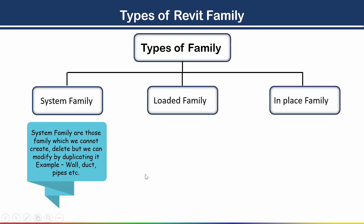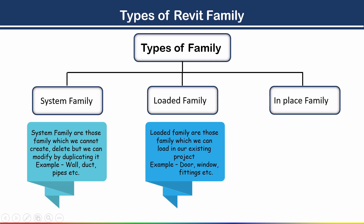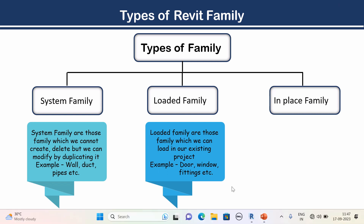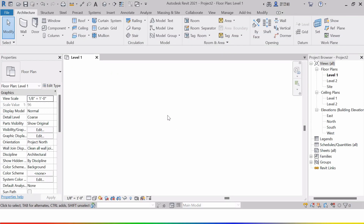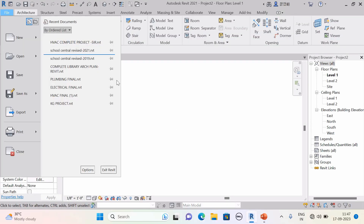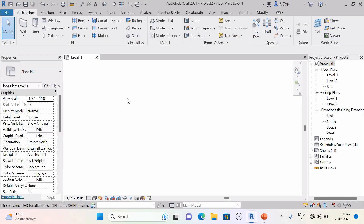Now let's move to the next type: the loaded family. Loaded families are those families which we can load into our existing project. Examples include doors, windows, and fittings. Let's take an example in the software.